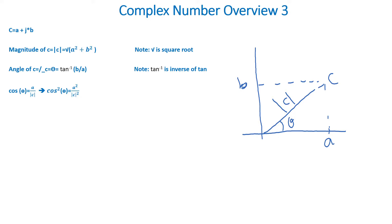We square both sides to get cosine theta squared is equal to a squared divided by c squared. Then sine theta is equal to b divided by c, and squaring both sides gives sine theta squared is equal to b squared divided by c squared.